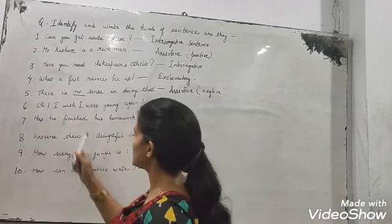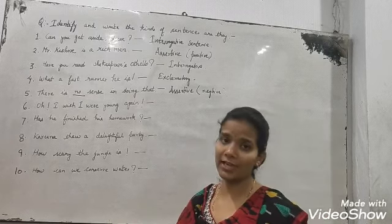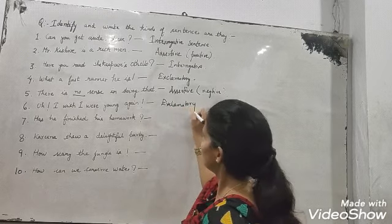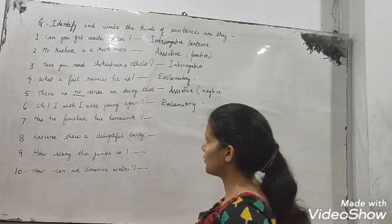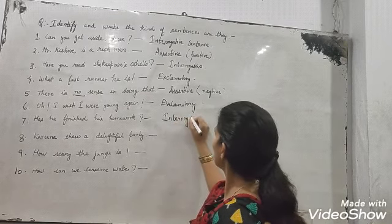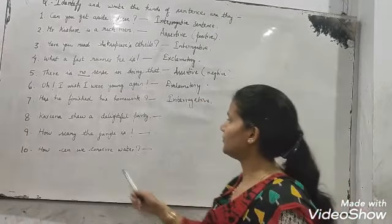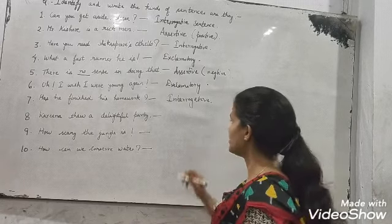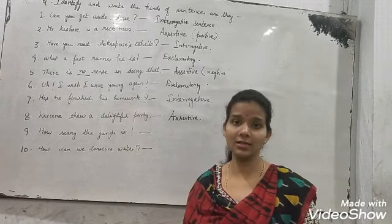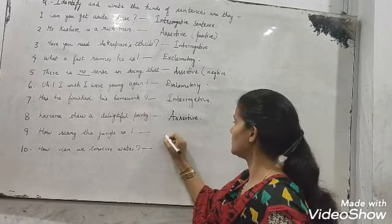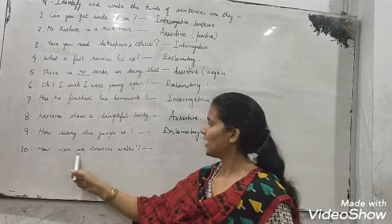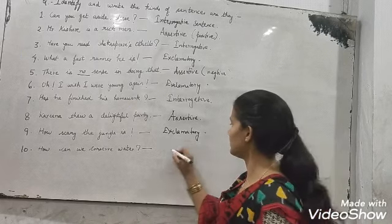Sixth: 'I wish I were young again!' — you are telling your feeling, so it is exclamatory. Seventh: 'Has he finished his work?' — you are asking a question, so it is interrogative. Eighth: 'Karina went to a delightful party' — this is assertive. Ninth: 'How scary the jungle is!' — you are sharing a feeling, so it is exclamatory. Tenth: 'How can we conserve water?' — you are asking a question, so it is interrogative.